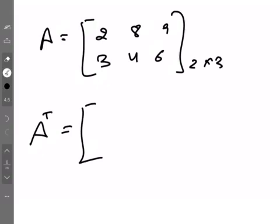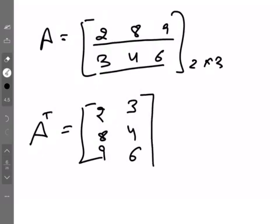The first row we will write in the first column. The second row we will write in the second column. So this is what is made transpose which is of size 3 by 2.